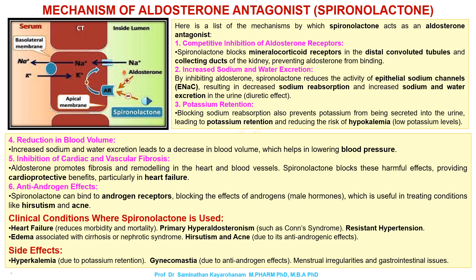Mechanism of aldosterone antagonist, spironolactone. Here is a list of the mechanisms by which spironolactone acts as an aldosterone antagonist. 1. Competitive inhibition of aldosterone receptors. Spironolactone blocks mineralocorticoid receptors in the distal convoluted tubules and collecting ducts of the kidney, preventing aldosterone from binding.